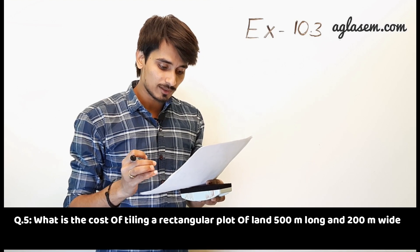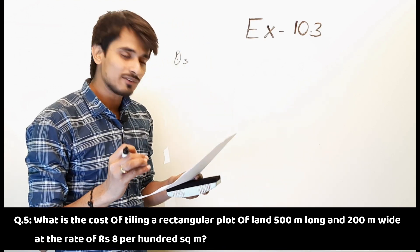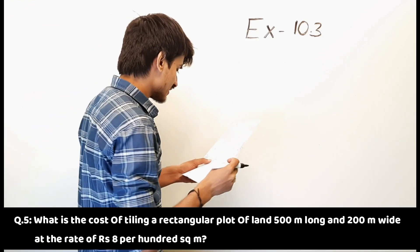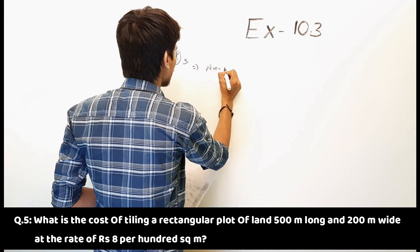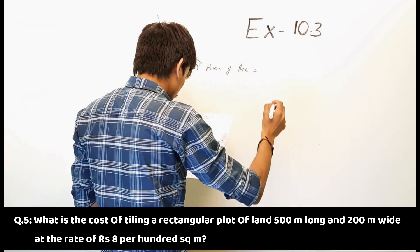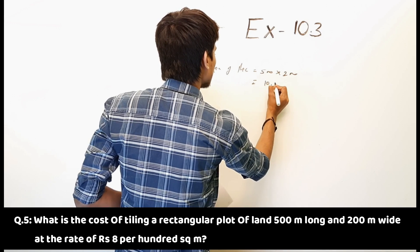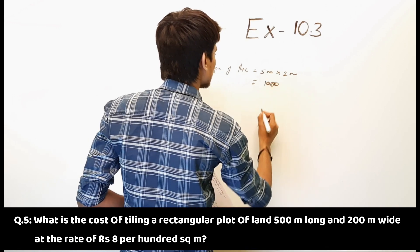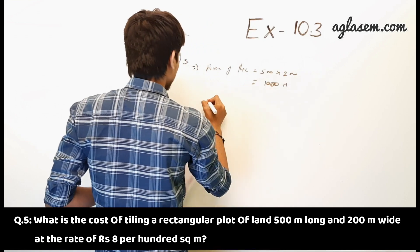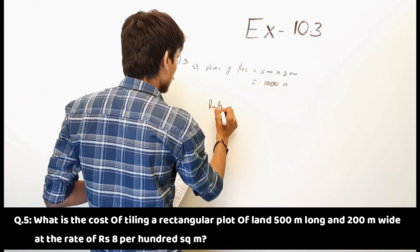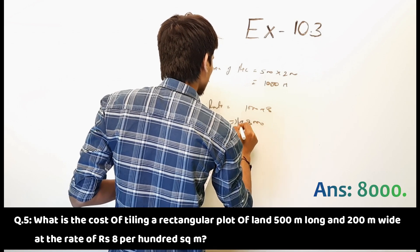Fifth question: what is the cost of tiling a rectangular plot 500 meter long and 200 meter wide at the rate of rupees 8 per 100 square meter? Area of rectangle is equal to 500 multiplied by 200 is equal to 1,00,000 meter square. So cost is equal to 1,00,000 multiplied by 8 divided by 100 is equal to 8,000 rupees.